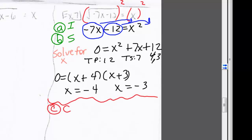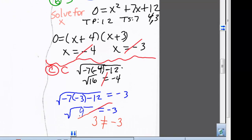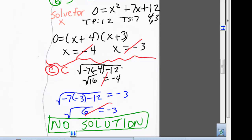Now we need to check. Plugging negative 4 back into the original equation gives 4 equals negative 4, which is a false statement, so negative 4 is not a solution. Plugging negative 3 into the original equation also results in a false statement: 3 is not equal to negative 3. Neither number is a solution, therefore there is no solution to this problem.